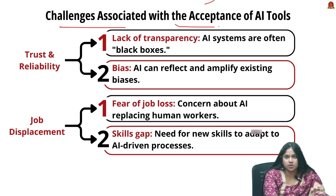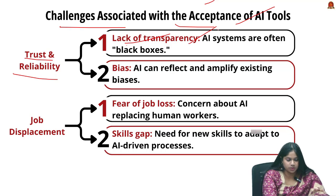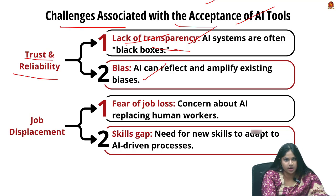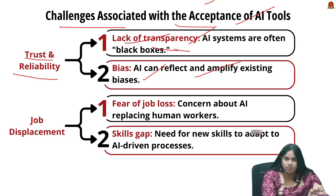Challenges associated with the acceptance of AI tools — first is trust and reliability: AI systems often operate as black boxes, lacking transparency, making it hard for users to understand how decisions are made, leading to mistrust. Next is bias and fairness — AI tools can reflect and amplify existing biases in data, leading to unfair outcomes that undermine public confidence.